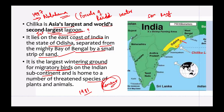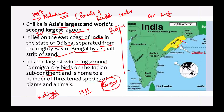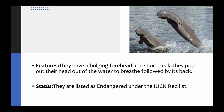There is also the Kalijai Temple, located on an island within Chilika Lake. You should know about Chilika because questions about Chilika Lake have previously been asked in the UPSC prelims. Now we'll talk about the features of Irrawaddy dolphins.